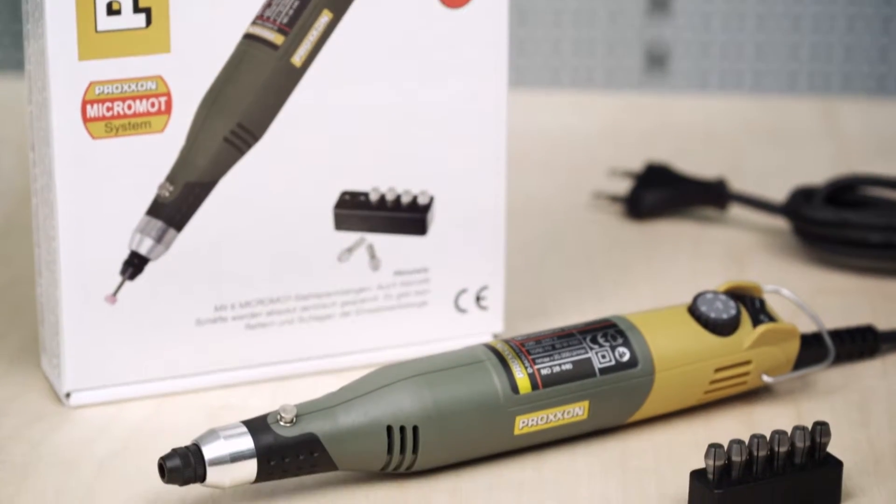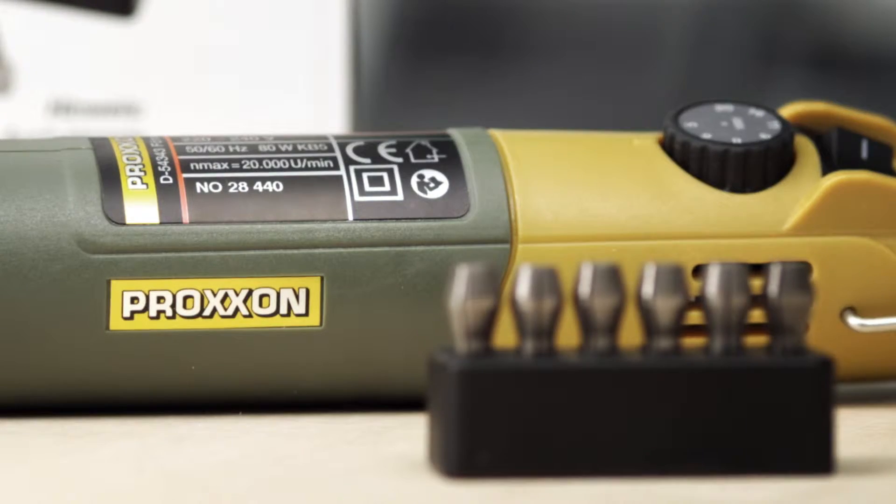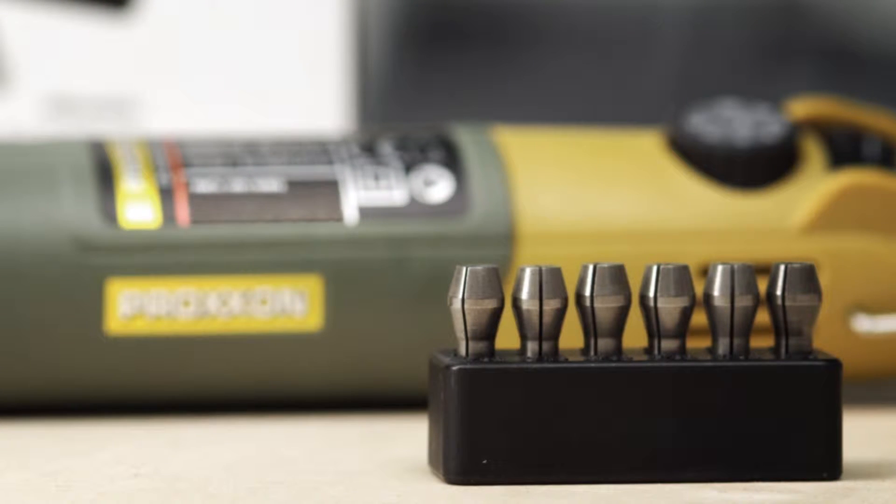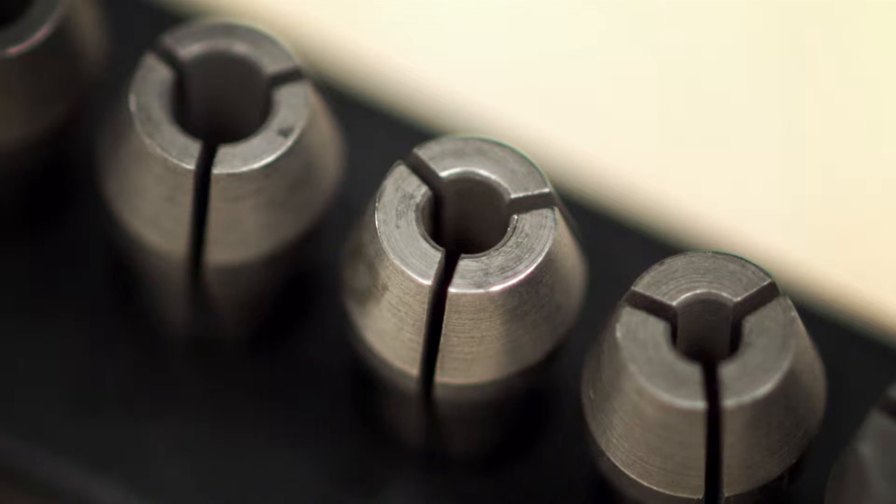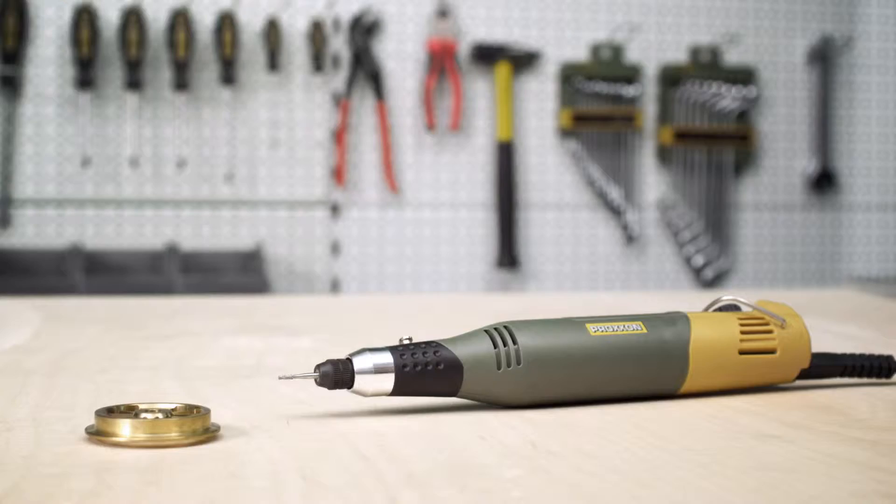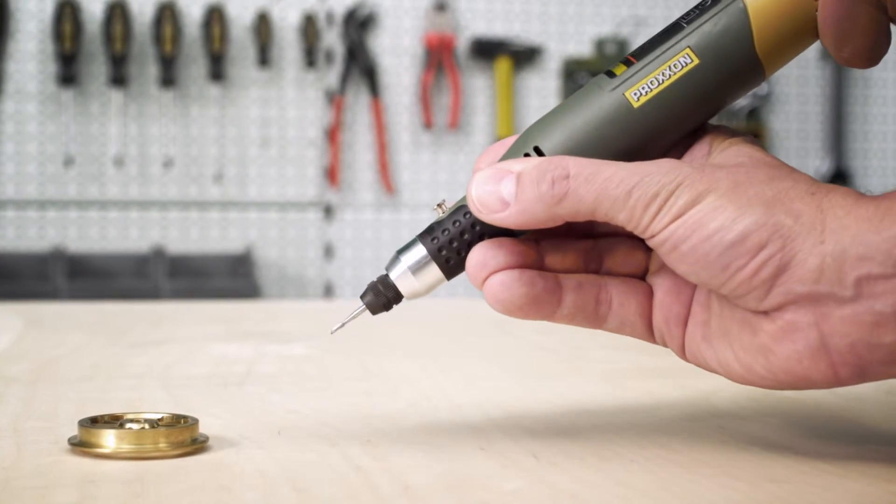Included is a set of six high precision collets which are suitable for use with a variety of accessories. Our special hardened steel collets have triple slits. This provides maximum support and optimal concentric accuracy of the bits and cutters.